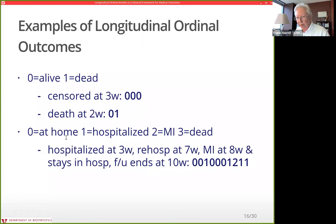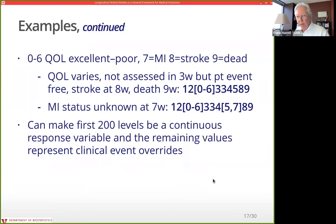For the simplest case — a terminating event — status at each time interval is either alive or dead. Someone followed for three weeks without the event has data 0-0-0; someone who died at two weeks has 0-1. Analyzing this with a pooled logistic model gives a hazard ratio indistinguishable from a Cox model odds ratio. You can extend to multiple levels: okay/at home, hospitalized, myocardial infarction, or dead. A longitudinal record might show hospitalization at week 3, home, re-hospitalization at week 7, heart attack at week 8, still in hospital through week 10.